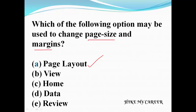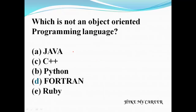Next question: which is not an object-oriented programming language? A: Java, B: C++, C: Python, D: Photon, E: Ruby. Answer is Photon — Photon is a procedure-oriented language. Java, C++, Python, and Ruby are object-oriented languages.